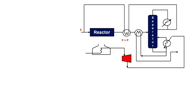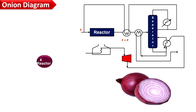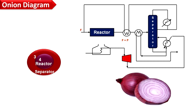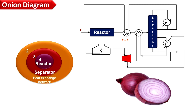The hierarchy of chemical industry can be represented by an onion diagram, where basic equipment such as reactor, separator, heat exchangers, and utility systems are shown with different layers of the onion, as it is shown in this diagram.